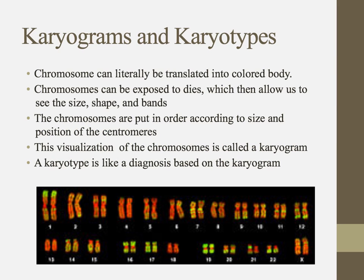The way we get the word chromosome is actually pretty interesting. Chromo means color, and som means body — it literally translates into colored body. To get an image like this, we expose these pieces of genetic material to different dyes. Those dyes allow us to see the different sizes and shapes and sort them by length. To produce this image, we take those colored bodies — when you get this image at first in the cell, they're all mixed up. We just put them together in order of size and match up the homologous pairs, kind of like matching up socks. This picture is called a karyogram.